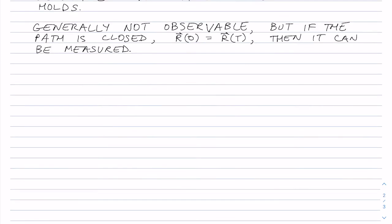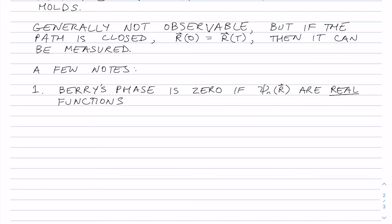A few points about Berry's phase. First is that Berry's phase is zero if the instantaneous eigenvectors are real functions, or if they can be chosen to be real. We can prove that we would have the wave function and the derivative of the wave function with respect to time or with respect to space, either way, would be real. But we said that it's purely imaginary, and therefore it has to be equal to zero. So if the wave functions are real, then their derivatives are real, and therefore they must be zero.